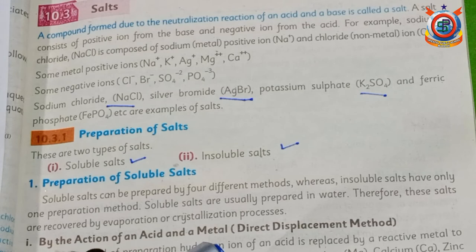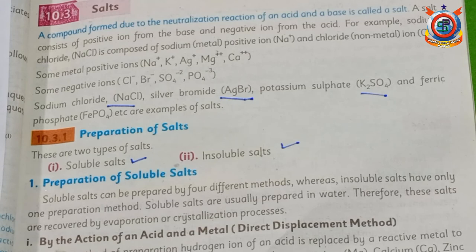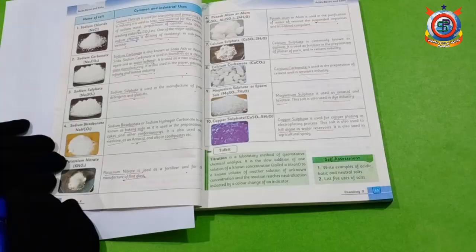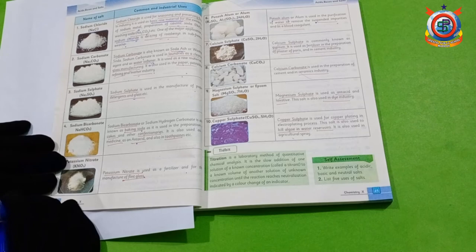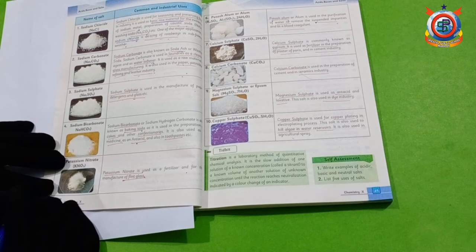Then we discussed the uses of salts: sodium chloride is used as a raw material for the manufacturing of washing soda and caustic soda. Sodium bicarbonate is also used in cake and paper industries. Sodium sulfate is used in the manufacturing of paper, detergent, and glass. Calcium carbonate is used in the preparation of cement. Magnesium sulfate is used as an antacid and in dye industries. Copper sulfate is used for copper plating in electroplating and in agricultural spray. I hope you understand salts and their uses. Next lecture — take care of yourself. Allah Hafiz.